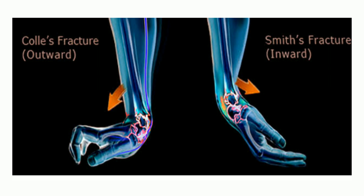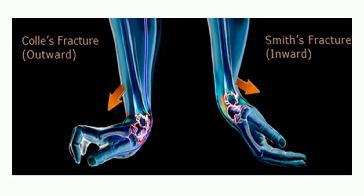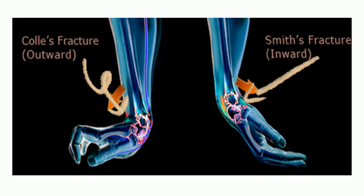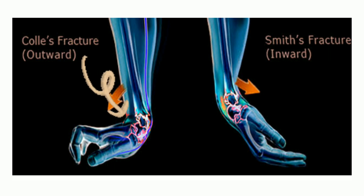Most displacement can be identified on X-ray. Smith's fracture is a reverse of Colles' fracture. It is an uncommon fracture seen only in adults and elderly people. Its importance lies in differentiating it from the commoner Colles' fracture, which occurs at the same site. It differs in that the distal fragment displaces ventrally and tilts ventrally. Treatment is by closed reduction and plaster cast immobilization for 6 weeks, and complications are similar to those of Colles' fracture.